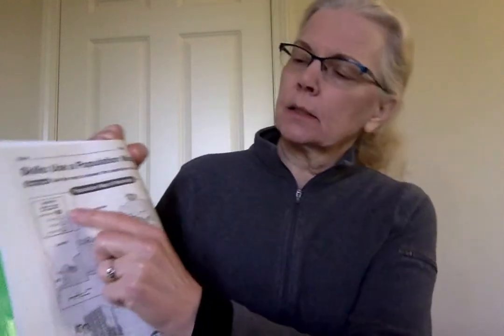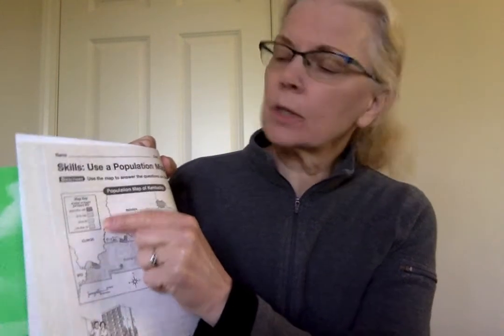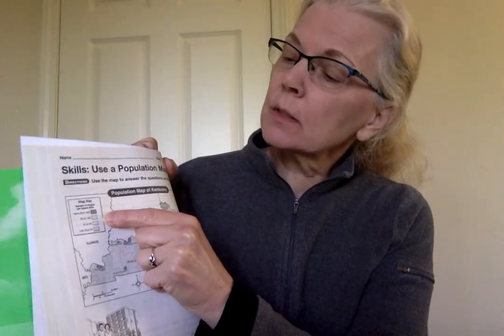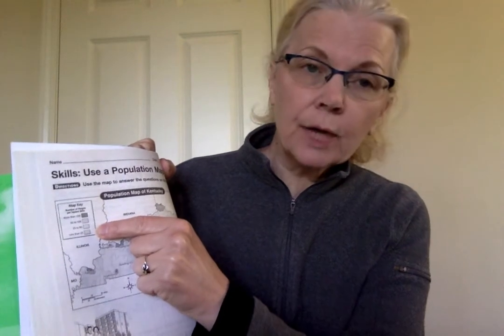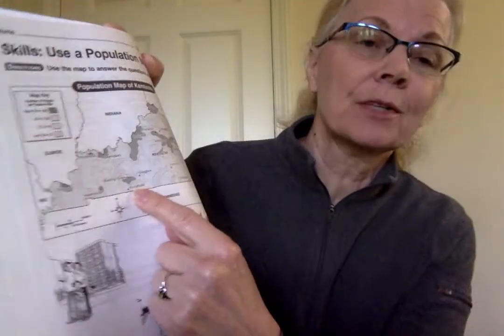Number two: which pattern shows the highest population density? Is it dark gray, stripes, dots, or light gray? Those are your choices. Number three: which city has a higher population density — Russellville or Bowling Green? Bowling Green is right here. When I look for Russellville — I found it, my finger was covering it — there's Bowling Green in the dark gray and there's Russellville in the stripe.